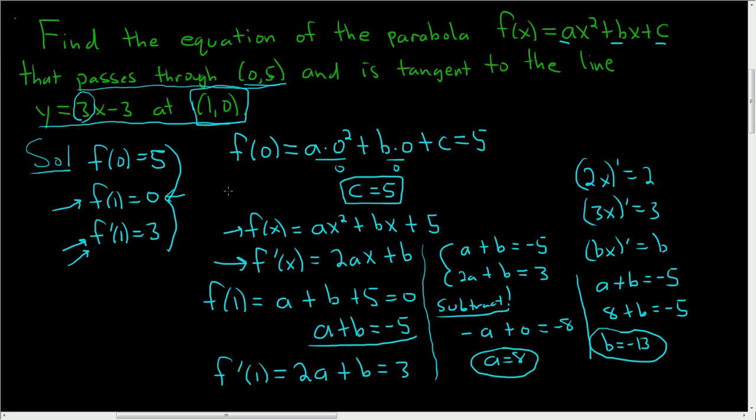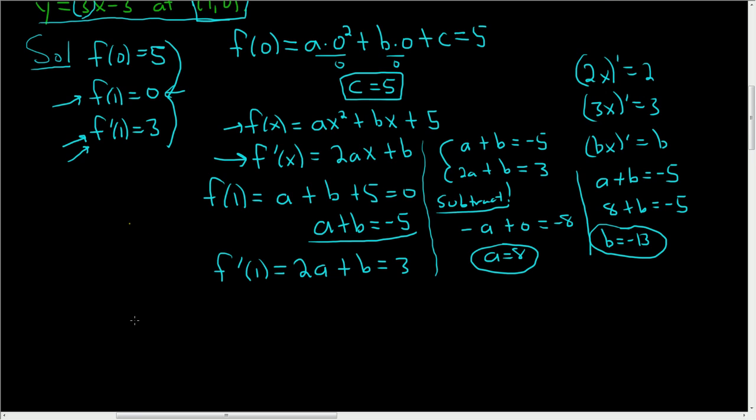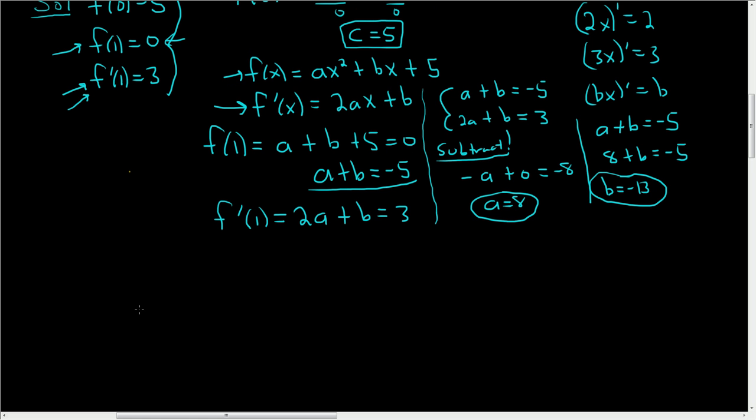The last step is to write down the equation of the parabola. We have f(x) = ax² + bx + c. Plugging everything in: a = 8, so 8x²; b = -13, so -13x; and c = 5, so +5.